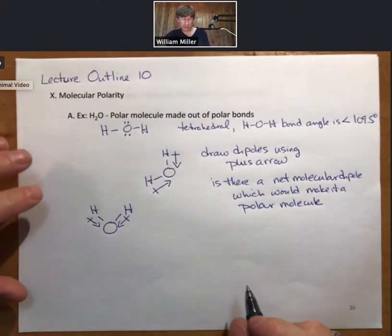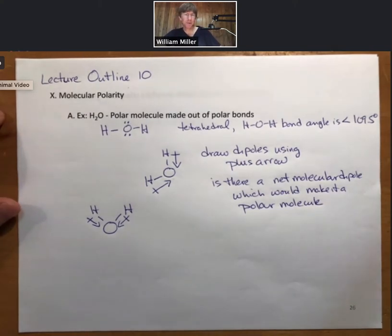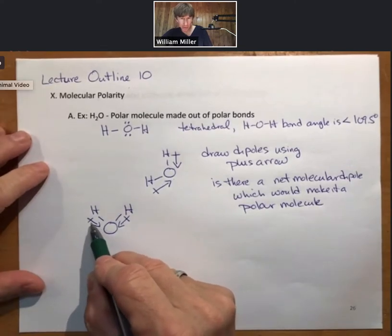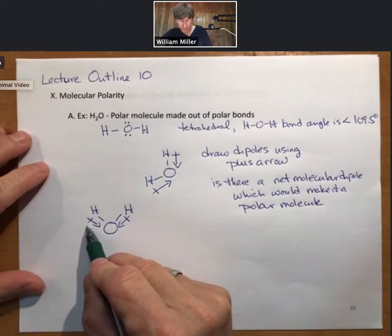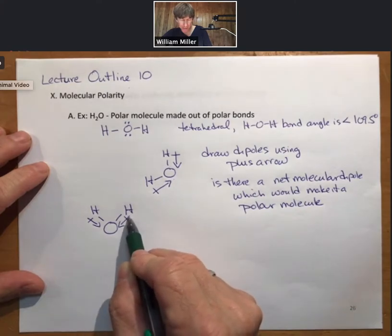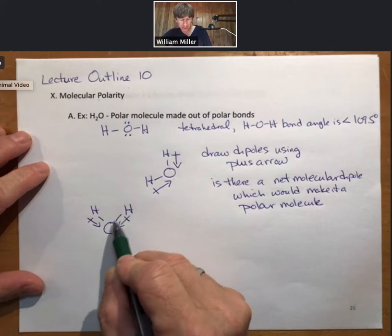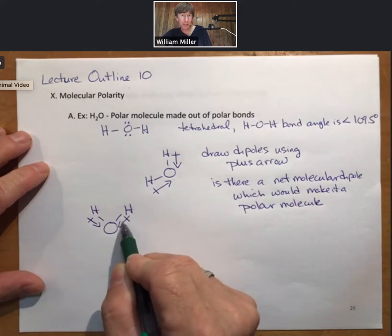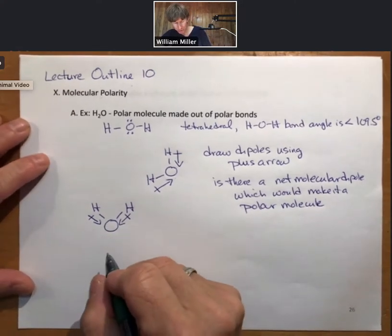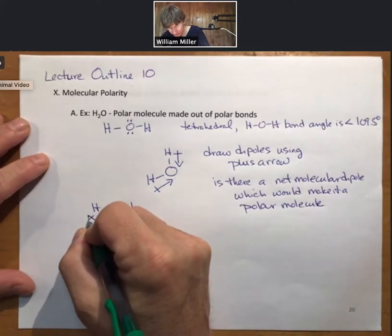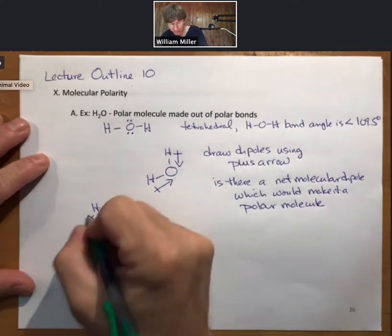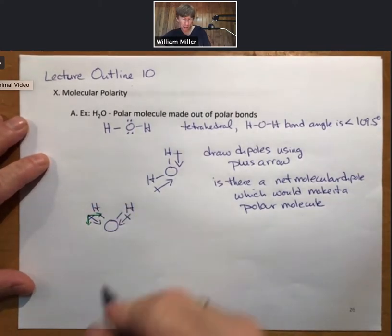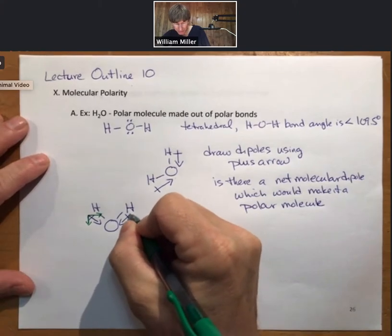What we're going to imagine is that a dipole is a vector. A vector has both magnitude, which means size or number, and direction. So this dipole is going down and to the right, this dipole is going down to the left. Because they're the same two atoms, their magnitude or size is the same. So we're going to break this into a down part and a right part, and break this into a down part and a left part.